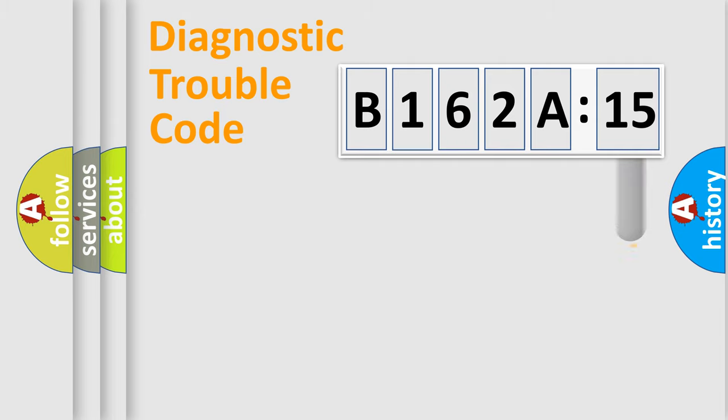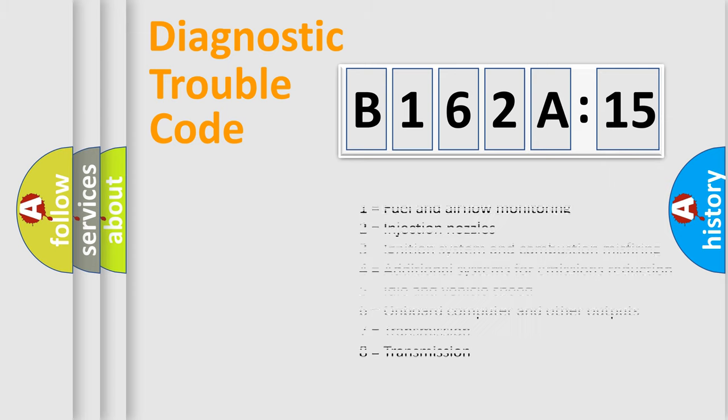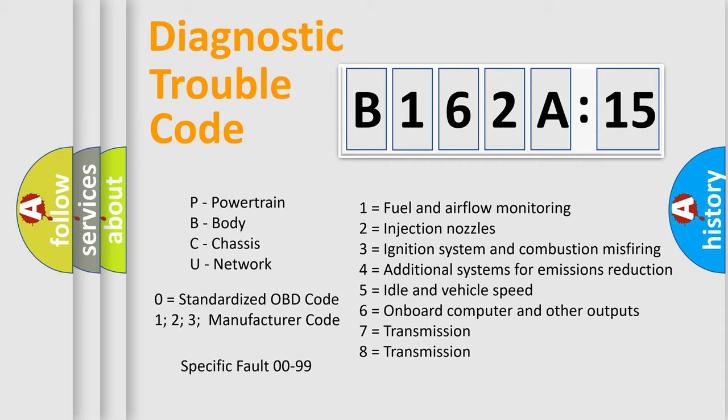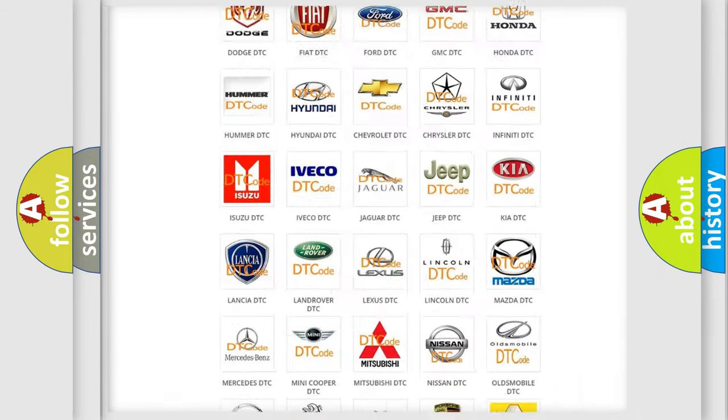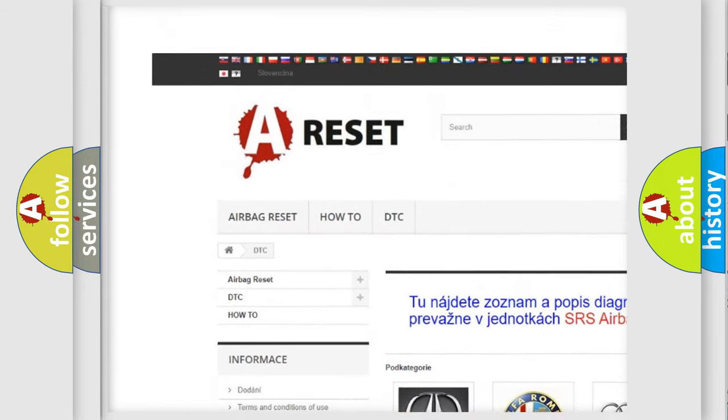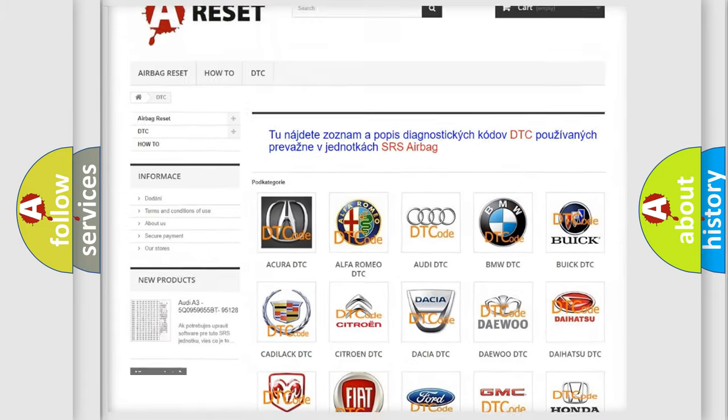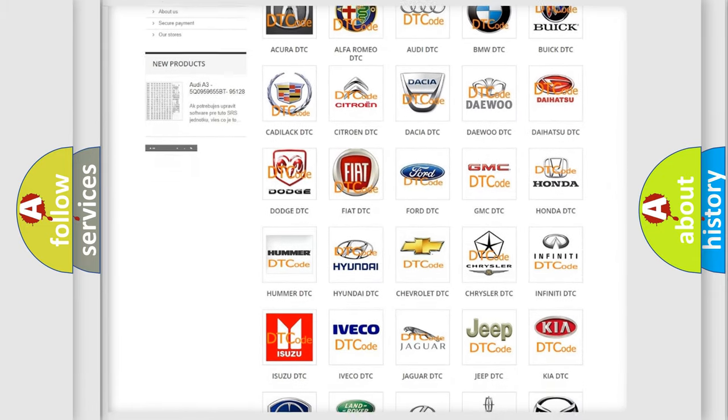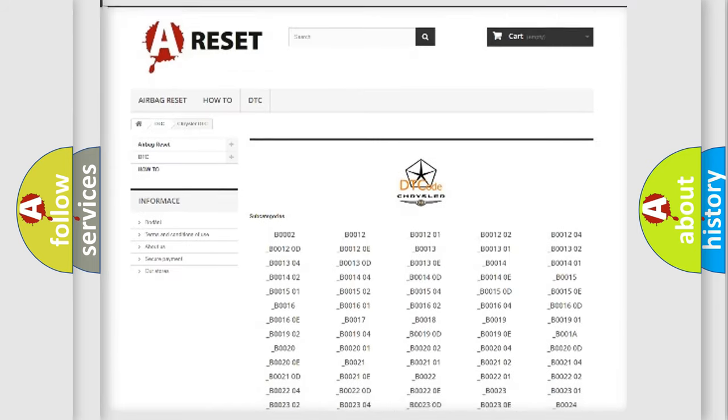Our website airbagreset.sk produces useful videos for you. You do not have to go through the OBD2 protocol anymore to know how to troubleshoot any car breakdown. You will find all the diagnostic codes that can be diagnosed in Chrysler vehicles, also many other useful things. The following demonstration will help you look into the world of software for car control units.